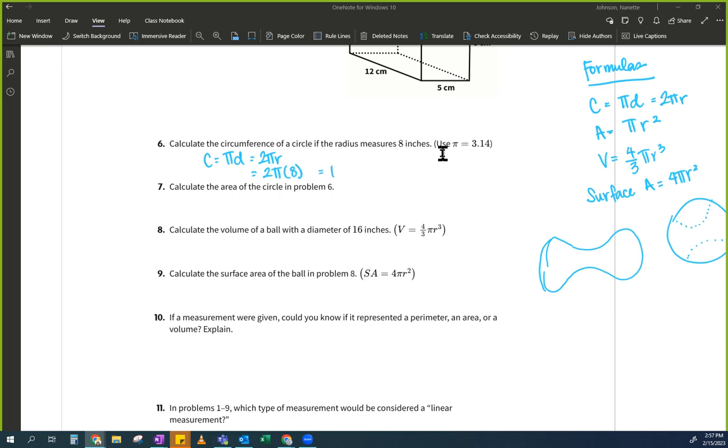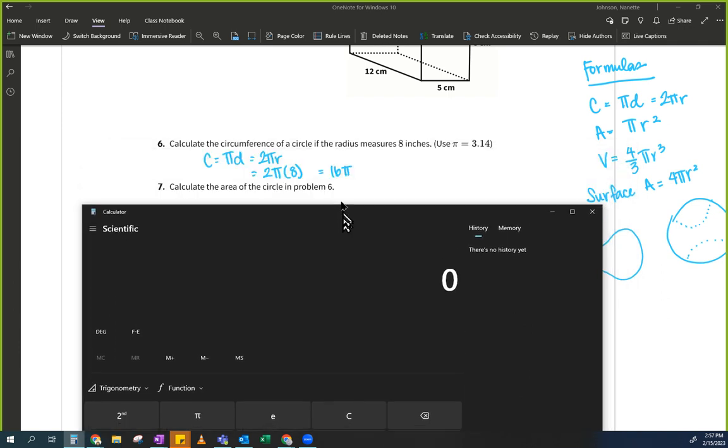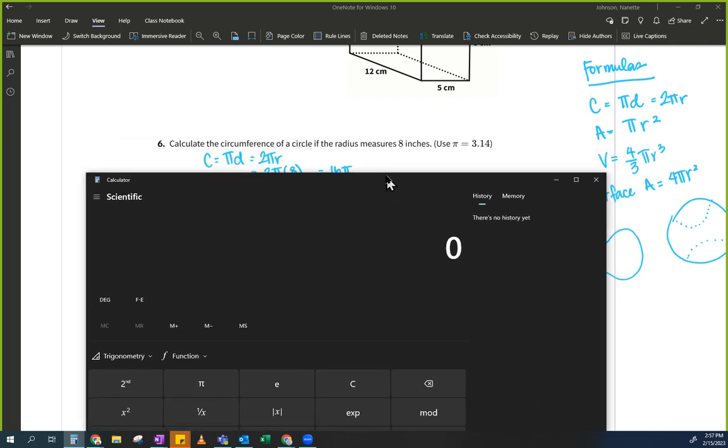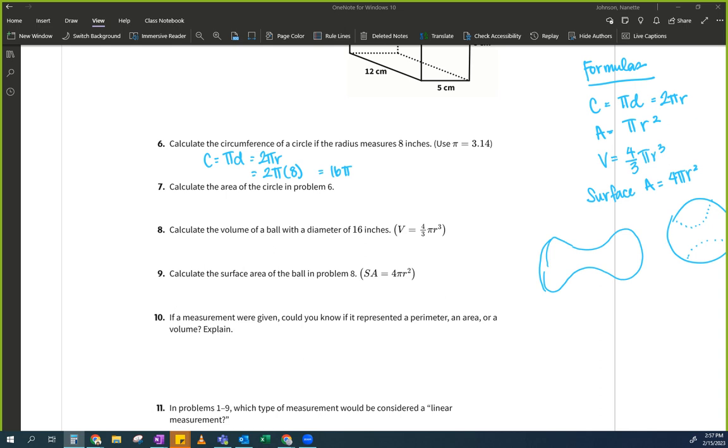So then I'm going to go here to this one. So two pi times eight and whatever that is, 16 pi. And then they want me to calculate it using 3.14. So I'm going to take out my handy dandy calculator. I'm actually going to use this one because this one's better. So I go two times 3.14 times eight equals 50.24.